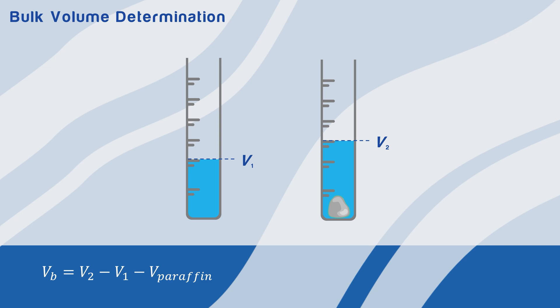Therefore, we need to subtract the volume of paraffin to obtain the actual bulk volume of the sample.